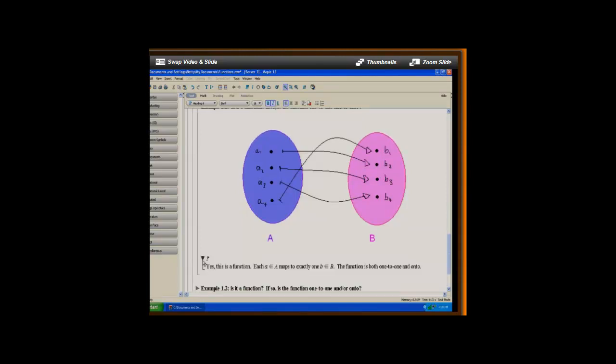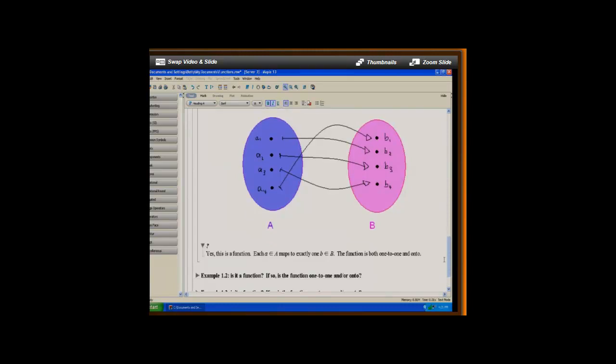And even better, it's one to one and onto. To check for onto, we want to see that every member of the target set B has been mapped to by a member of A, which again we can see by inspection.